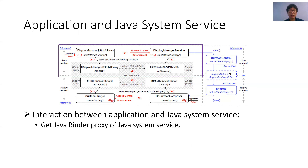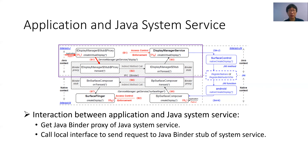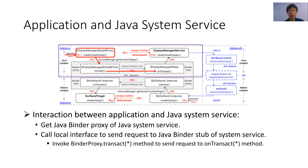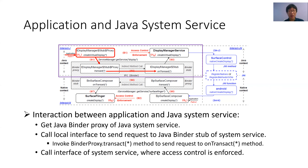First, Android applications get a Java binder proxy. Second, applications invoke the local interface to send a request to the Java binder stub. In this example, the local interface createVirtualDisplay defined in the binder proxy class IDisplayManager.Stub.Proxy is invoked, which internally calls the method transact to send a request to method onTransact of the binder stub class IDisplayManager.Stub. Third, onTransact handles the request and invokes the remote interface of the system service where the access control is enforced. In this example, the remote interface createVirtualDisplay of display manager service is invoked. Since this interface provides sensitive functionality of creating a secure virtual display, it enforces permission and UID checks on applications.